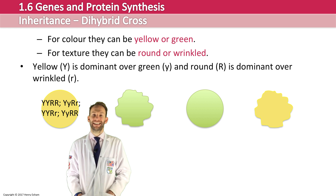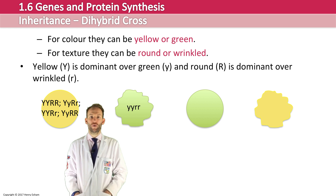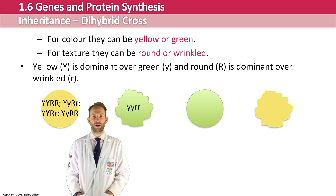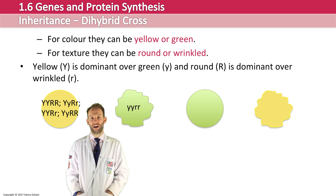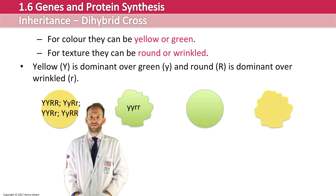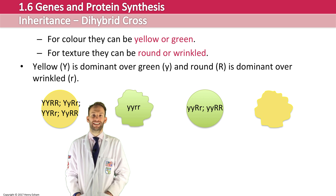A green wrinkled seed has to be homozygous recessive for both genes. Notice that we always write the Y alleles first, followed by the R alleles. We don't mix up the alleles — it's always the Y's together and the R's together, never Y, R, Y, R.